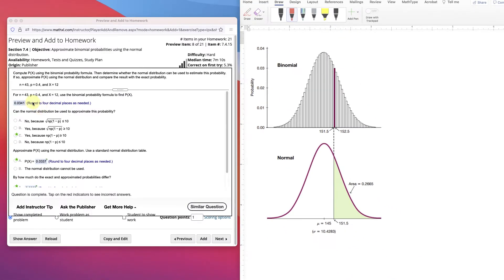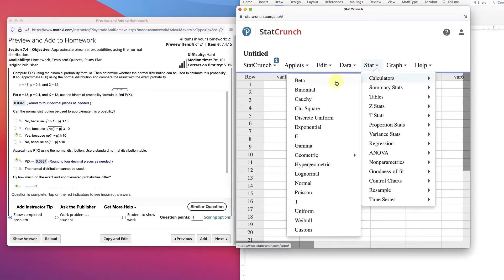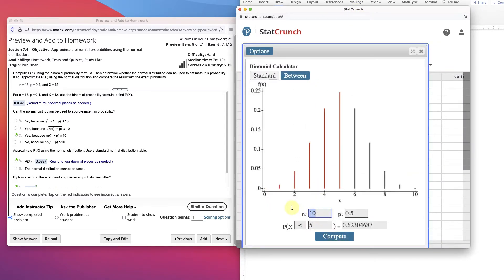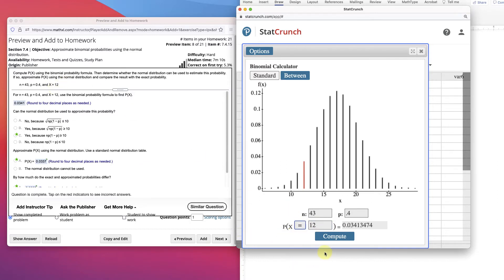So let's first do a problem in the binomial. Compute the probability here using the binomial formula. Let's do that in StatCrunch. I'll open StatCrunch here and go to Stat, Calculator, Binomial. Put in our n value 43, 0.4, and 12. And it wants it equal to 12, so we've got to change that to equal to 12. And compute.